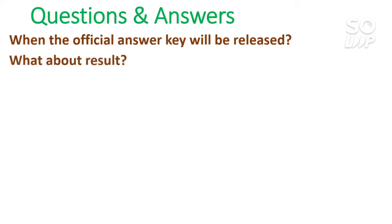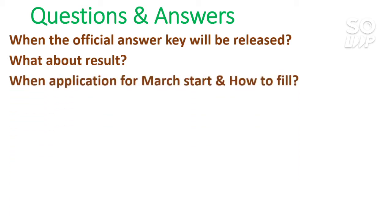Regarding the result, it is said to be announced on or before the 7th, so you can expect it between the 5th and 7th of March. Around the 2nd the official answer key will be released, and after that you have one or two days. If you think your answer is correct and the official key is wrong, you can raise a challenge by paying ₹200 per question — if your answer is correct, they will award you more marks and you will get a better percentile.